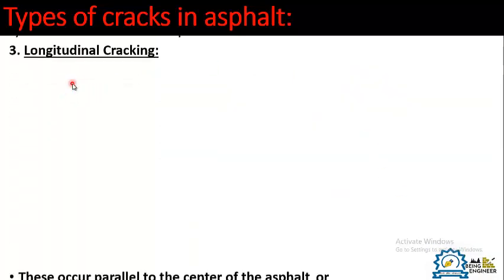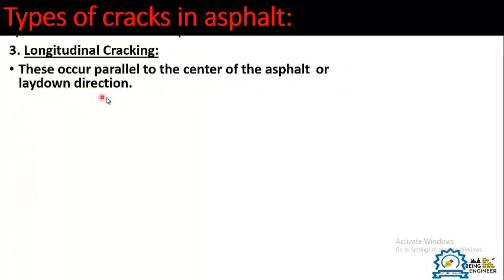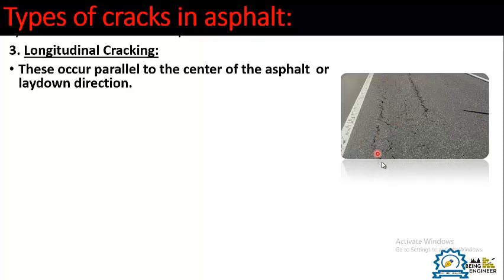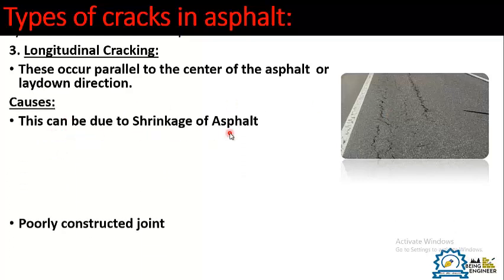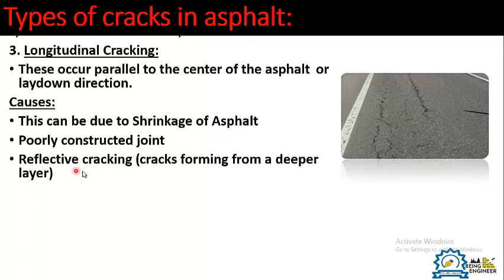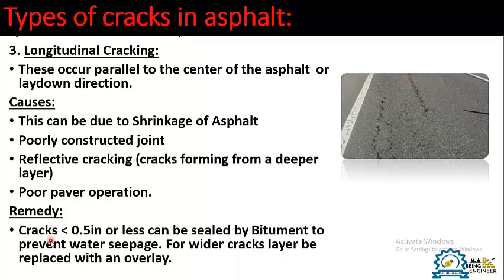Third is longitudinal cracking. These occur parallel to the centerline of the asphalt or lay-down direction — the cracks run parallel to the flow of traffic. Causes include shrinkage of asphalt, poorly constructed joints, reflective cracking from a deeper layer appearing on the surface, and poor pavement operations such as improper compaction. The remedy: if the crack is less than half an inch, it can be sealed with bitumen to prevent water seepage; for wider cracks, the layer should be replaced with an overlay.